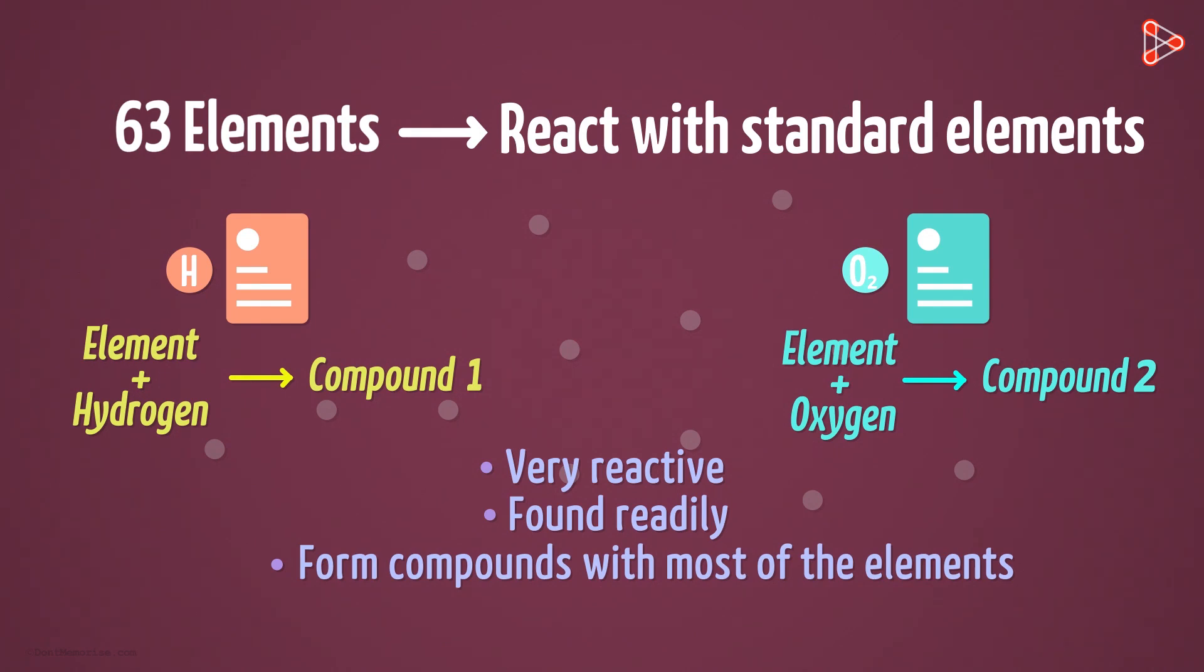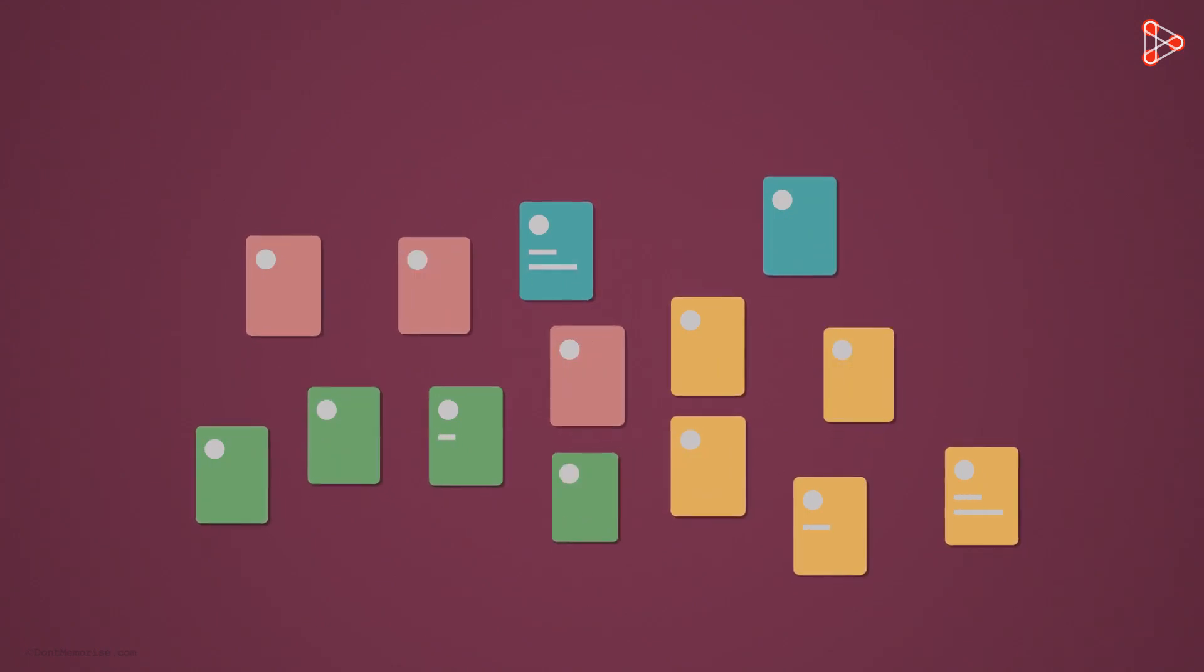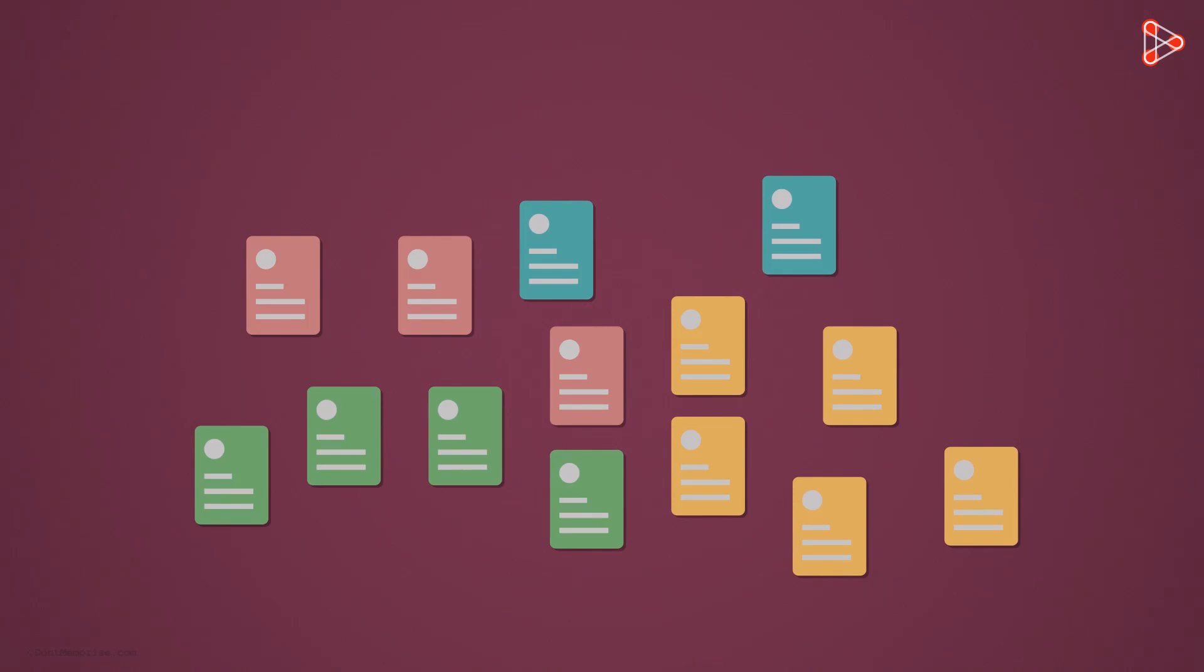Yes, this helped him understand the chemical properties of all the reacting elements. Later, in order to simplify the process, he wrote all the physical and chemical properties of each element on 63 different cards. Now all he had to do is arrange these cards.